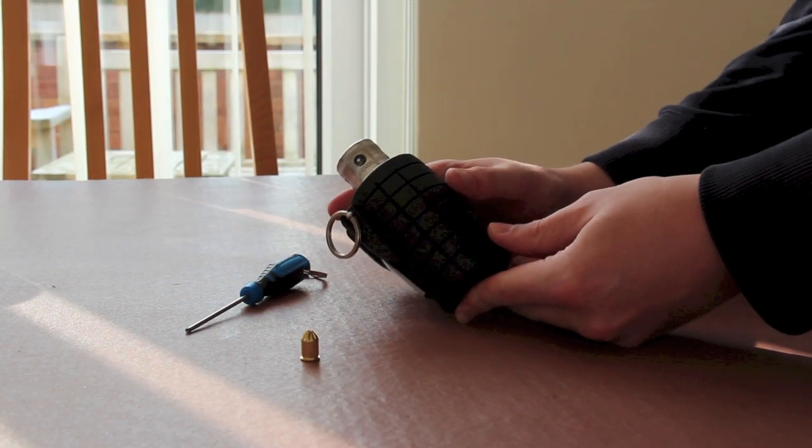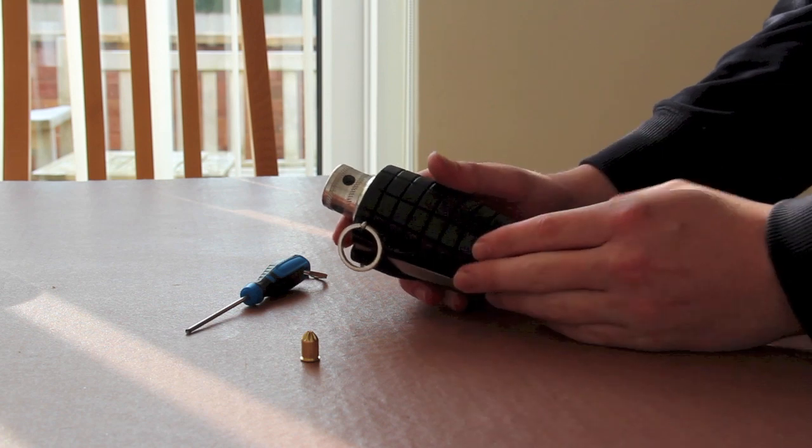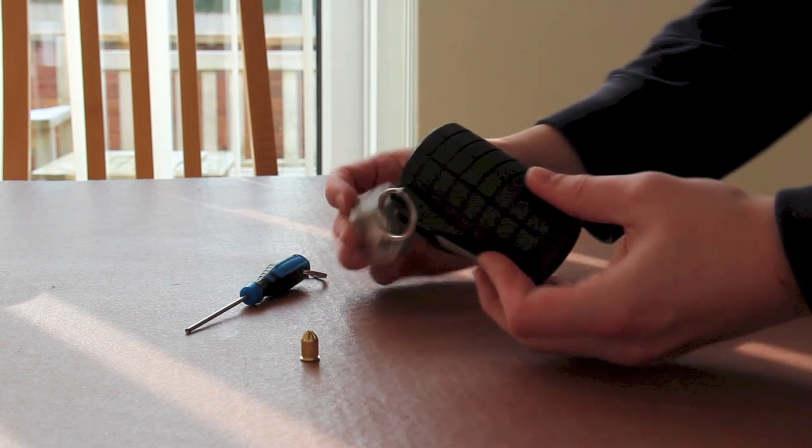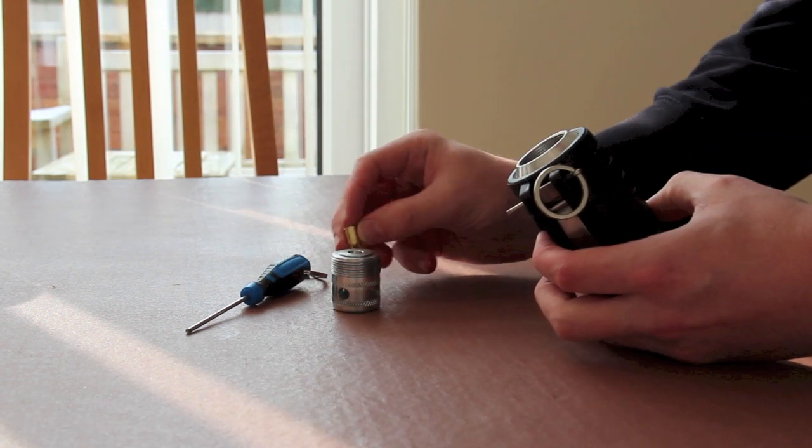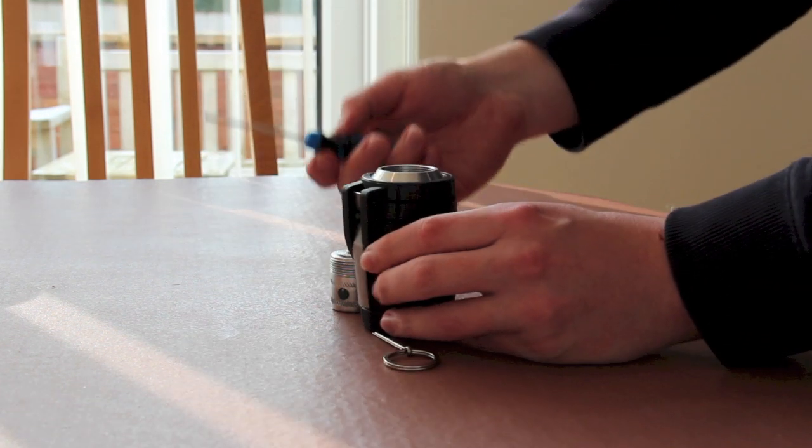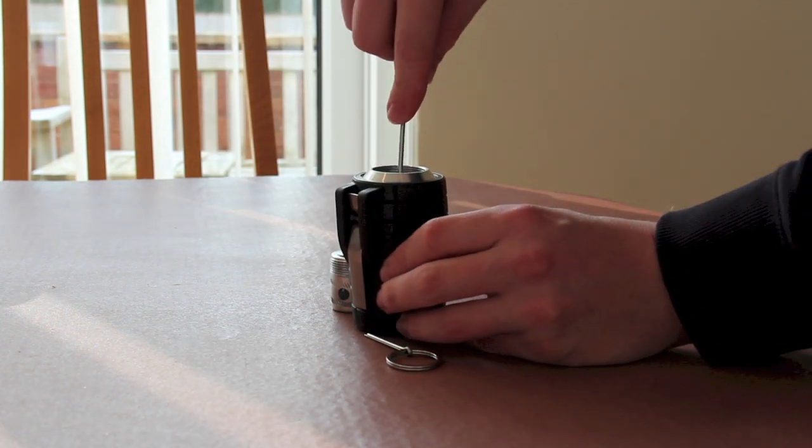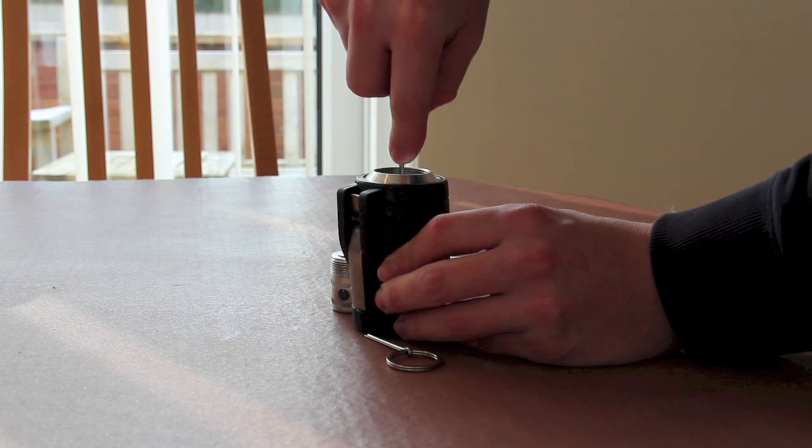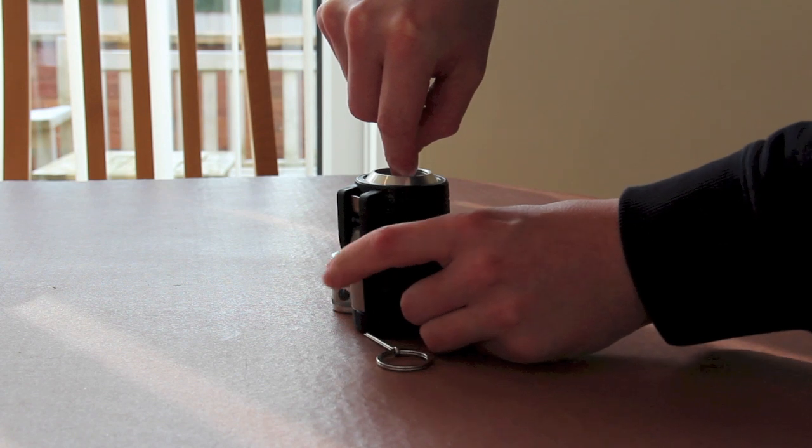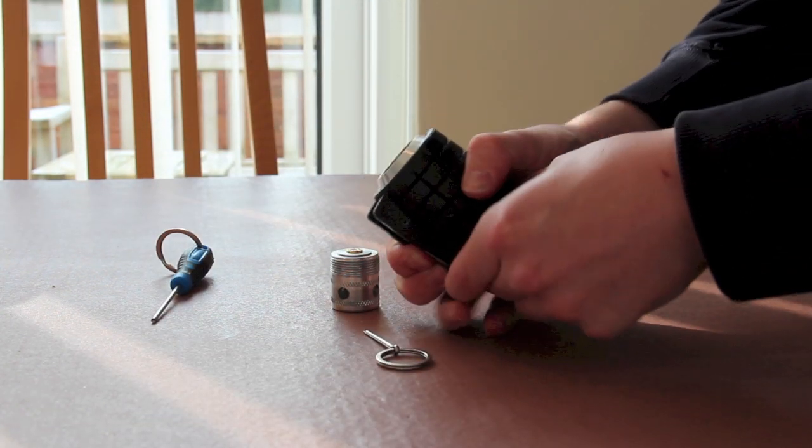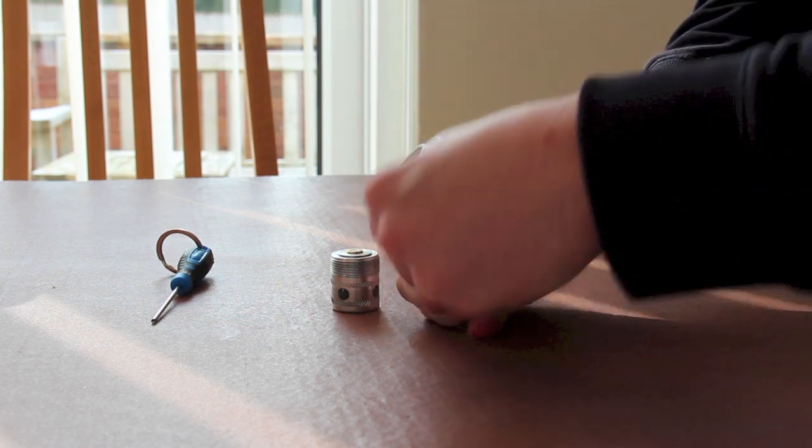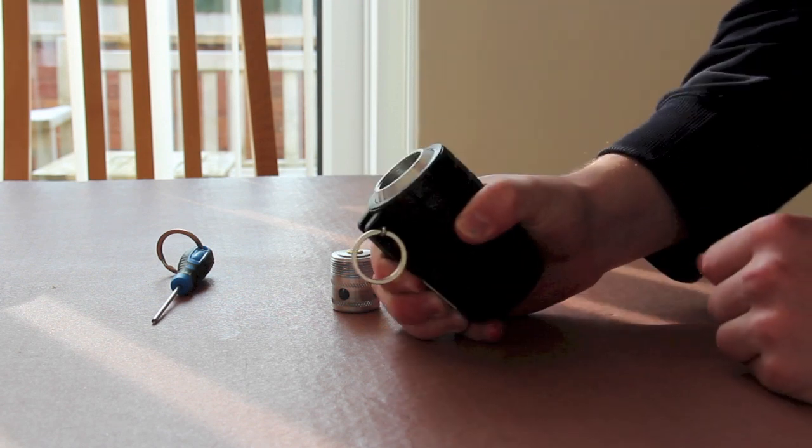It will come in this configuration: pin is in, firing pin is in the up position, and the cap is unloaded. First thing you want to do, unscrew the cap. Insert your blank ammunition into the cap like such. Pull the pin. Take your loading tool, put it on top of the firing pin, push down. You'll see the spoon pop out like such and then the spoon will go nice and loose. At that point you can take the loading rod out. Hold the spoon in nice and tight and re-put the pin back into the grenade.